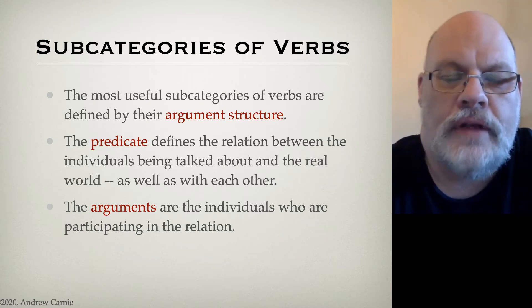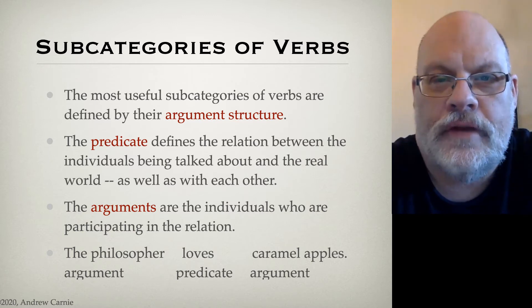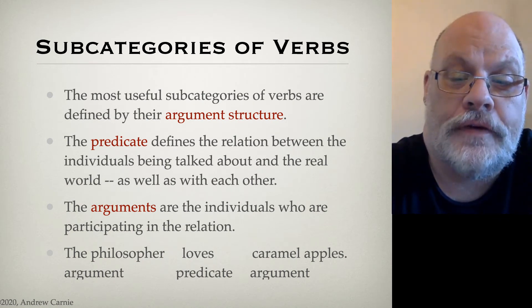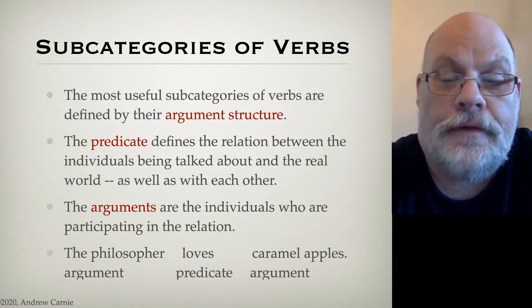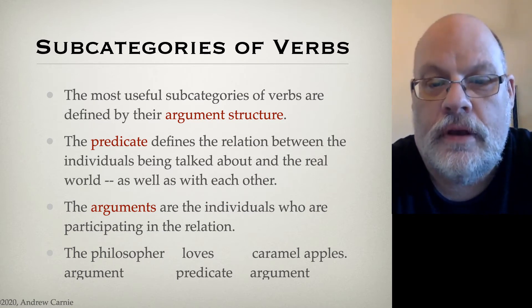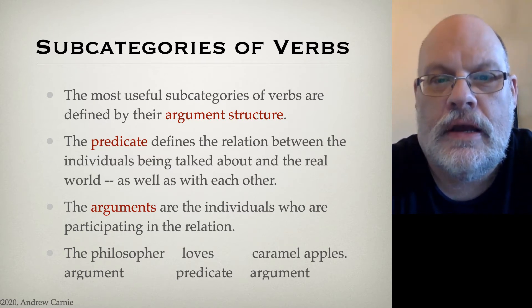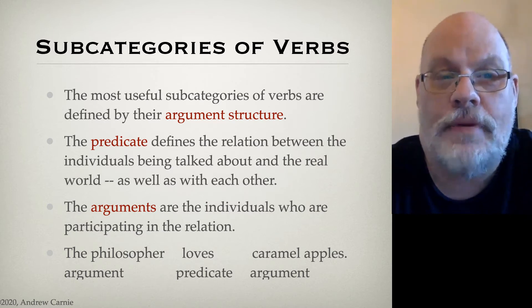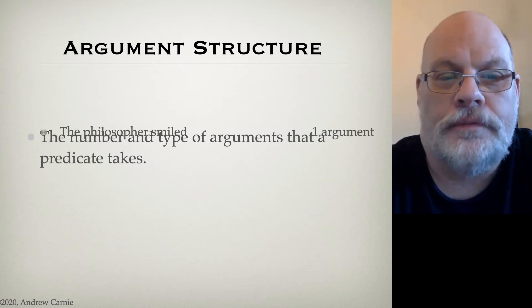Arguments are the participants in a predicate's relationship. Let's look at an example — these definitions are a little hard to parse as stated, but an example makes it clear. We have the predicate loves. That expresses a relationship between two individuals: the philosopher and caramel apples. The philosopher and caramel apples are arguments of the predicate loves. So those are predicates and arguments. We can discuss different subtypes of verbs in terms of the number and type of arguments they take — this is called argument structure.